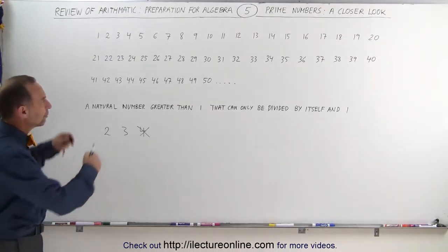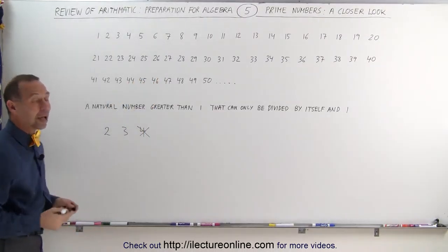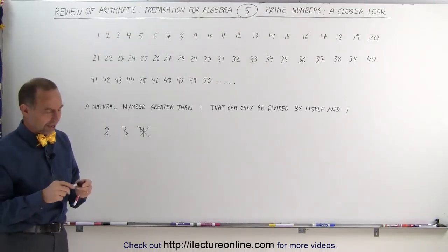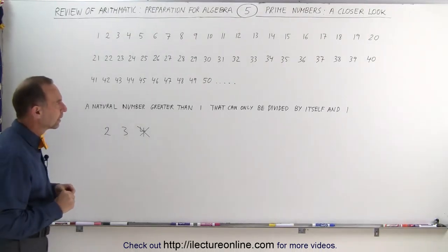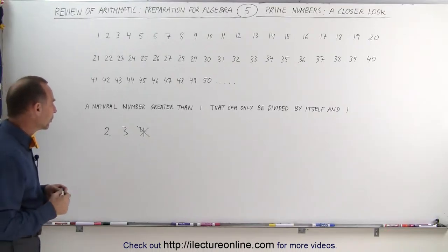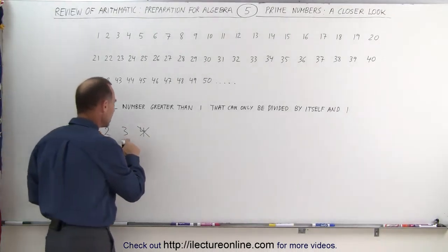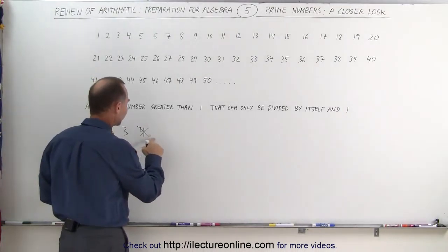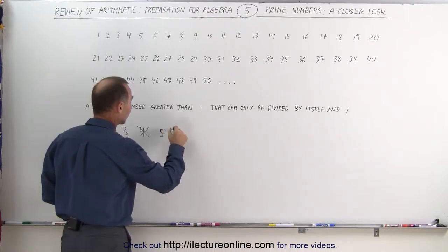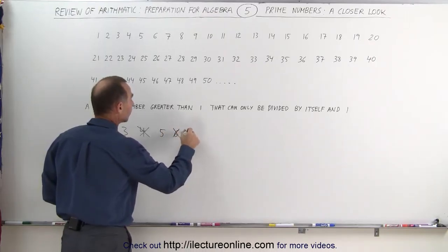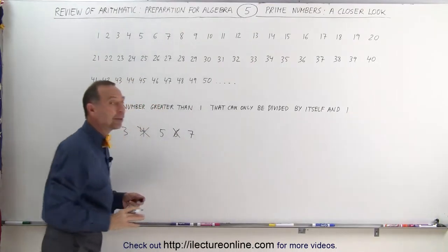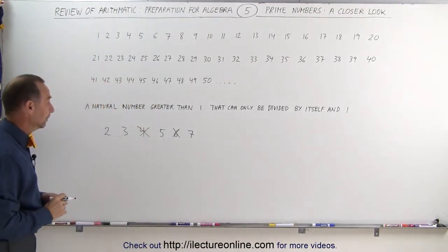Now, if we see a bunch of numbers like this, how do we figure out which is a prime number and which is not? Well, the smaller prime numbers are 2, 3 — 4 is not — 5 is a prime number, 6 is not, 7 is a prime number, and those are the only prime numbers smaller than 10.